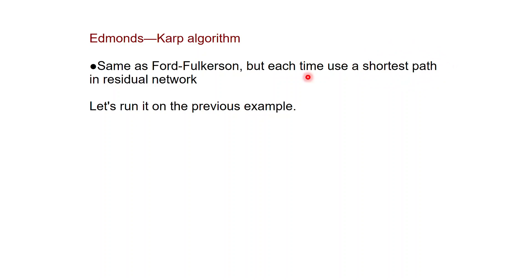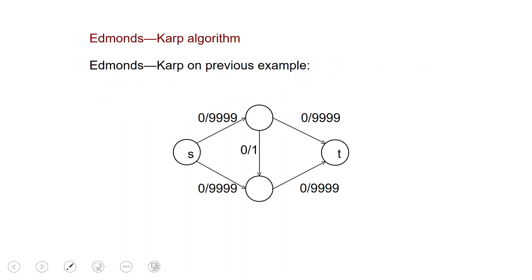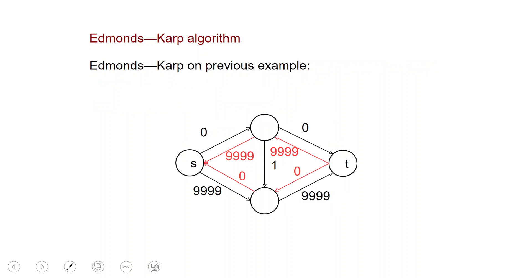But let's see how this simple modification will do in the previous example. Here is the previous example that we had. If we look at the shortest paths, we immediately find the shortest path of length 2, which does not go through the middle edge. We push the flow, we completely saturate these two edges.